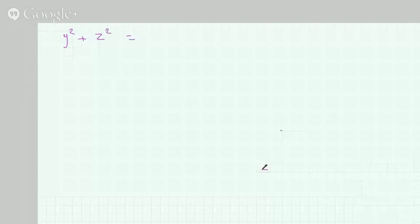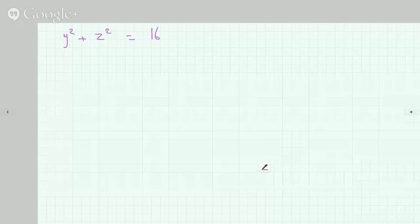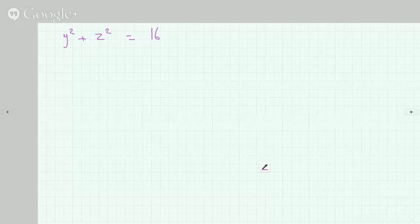So we've got here y squared plus z squared equals 16. Now watch, my x, since it doesn't appear in the equation, my x could be anything.